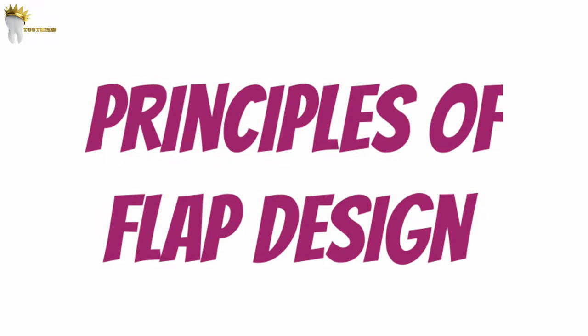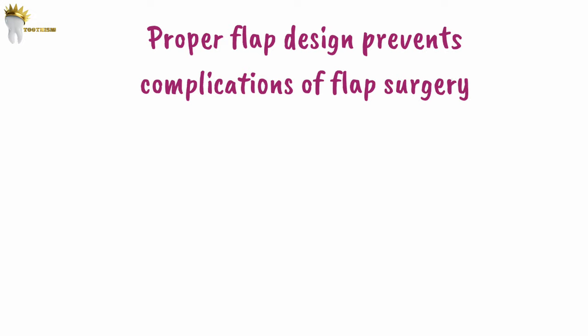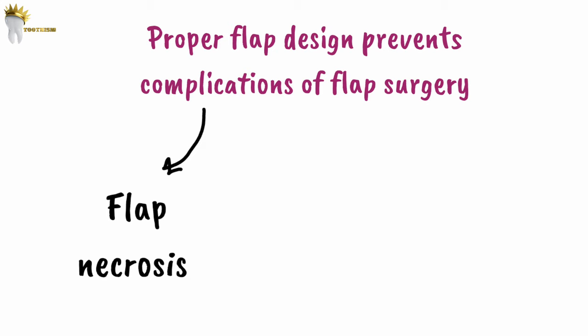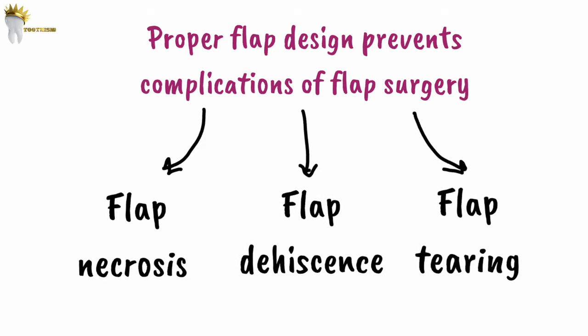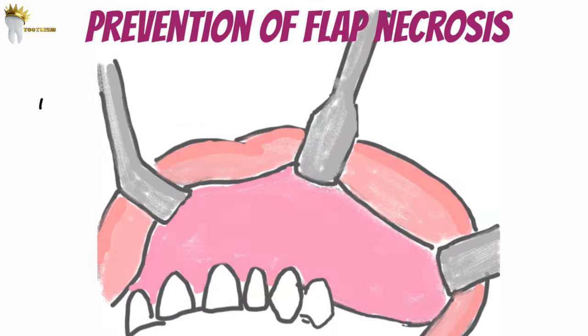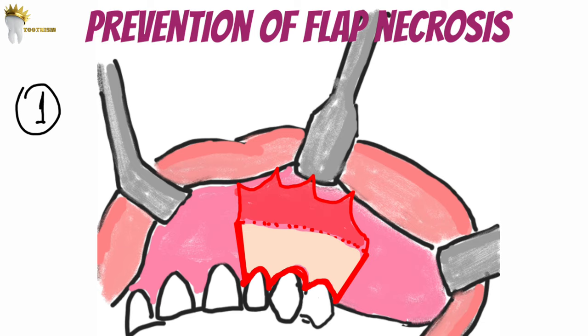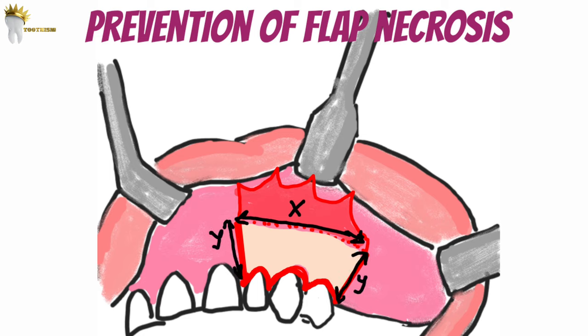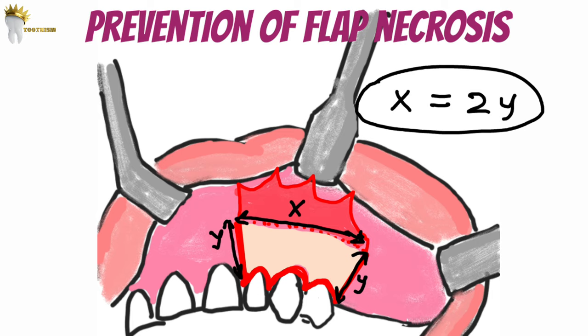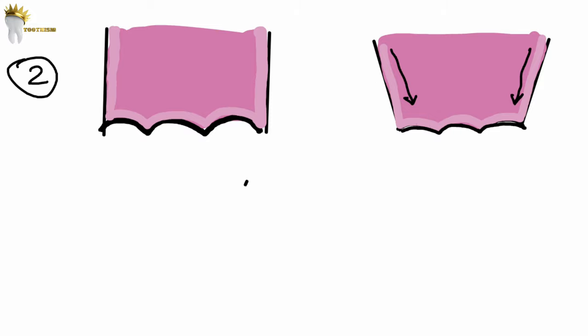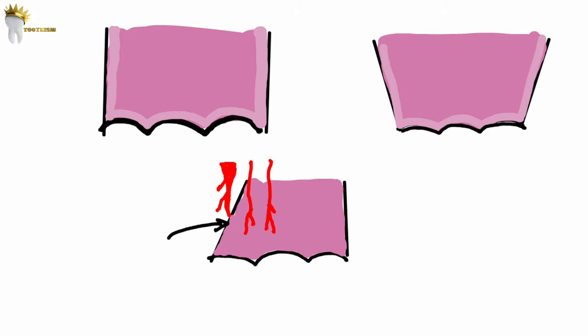Proper flap design is important to prevent complications like flap necrosis, flap dehiscence, and flap tearing. To prevent flap necrosis: the height of the flap should never be greater than the base — here X represents the base and Y is the height, so X should never be less than Y. Ideally the base should be twice the height of the flap. A wide base provides good blood supply, reducing chances of necrosis. The sides of the flap should be parallel to each other or converge from base to apex; a diverging releasing incision will cut off blood supply and result in flap necrosis.